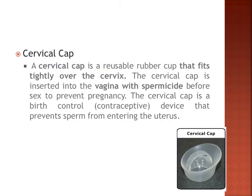Next we have the cervical cap. A cervical cap is a reusable rubber cap that fits tightly over the cervix, inserted into the vagina with spermicide before sex to prevent pregnancy. It is a contraceptive device that prevents sperm from entering the uterus. It is placed before coitus, and some users include spermicide with it for added protection.